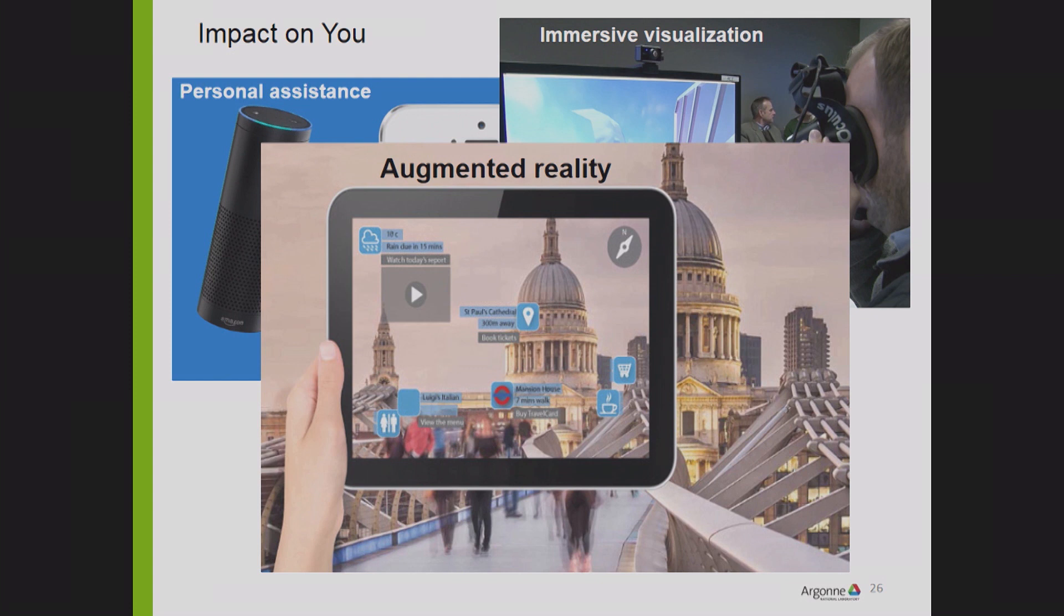You can get contextual information for what you see. So the augmented reality to me is the area that will be the most fruitful in research in the near future. Imagine that you look at a building and the software tells you not only when it was built but what architectural style that was, and who was the architect and can give you all kinds of other information.